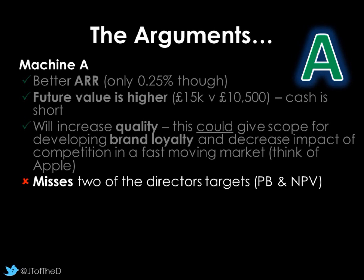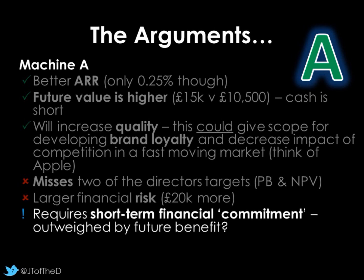Big issue about machine A. It misses two of our directors' targets. Payback and net present value fall outside of those targets. It takes longer than four years, and net present value is negative. This is not a worthwhile investment. There is a higher financial risk. It initially costs us £20,000 more, so that's £20,000 of cash. Do we have it? Really, it requires short-term financial commitment but could have bigger future benefits. We have more cash at the end, not in present value but in future value. It may safeguard us in terms of quality.